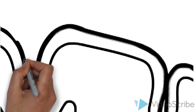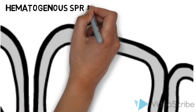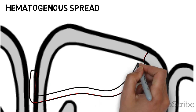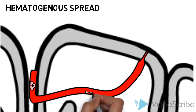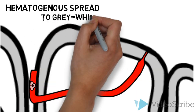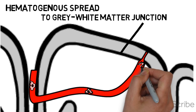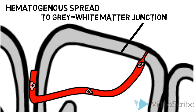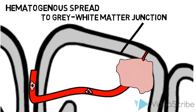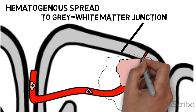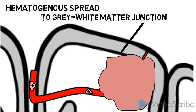Tumor cells metastasize to the brain by hematogenous spread through blood vessels. They usually become lodged at the gray-matter–white-matter junction, where the blood vessels abruptly decrease in size. As a result, brain metastases are often found at this junction.